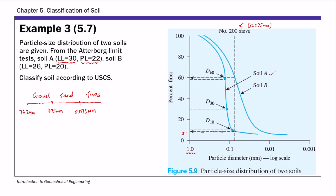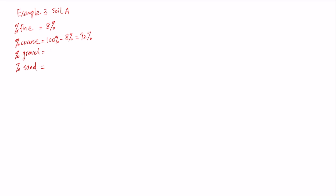On this chart, the largest particle size shown is 1.0 millimeter. For soil A, the largest particle corresponding to 100 percent passing is even smaller — around 0.8 to 0.9 millimeters. That means 100 percent of soil A passes 4.75 millimeters, so the gravel content is 0 percent.